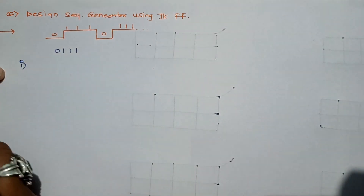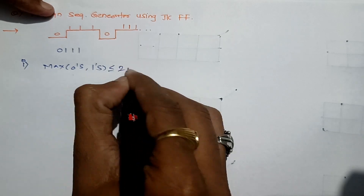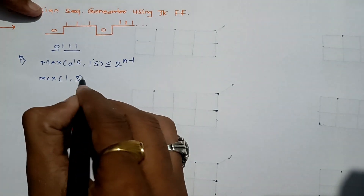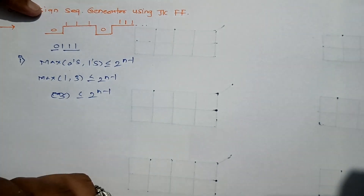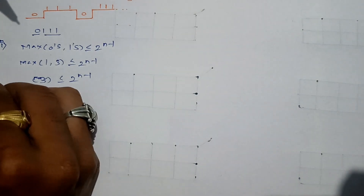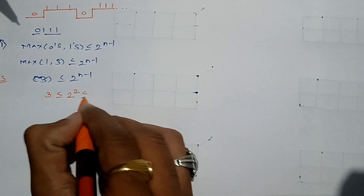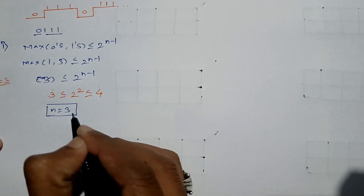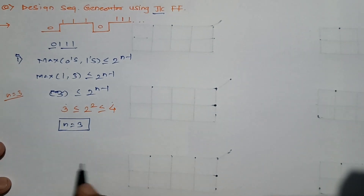The first step is to determine the number of flip-flops required. The formula is: max(count of zeros, count of ones) ≤ 2^(n−1). We have zero appearing once and one appearing three times, so the maximum is three. We need three ≤ 2^(n−1); putting n=3 gives 2^2 = 4, and three is less than four. So we need three flip-flops — specifically three JK flip-flops, named A, B, and C.